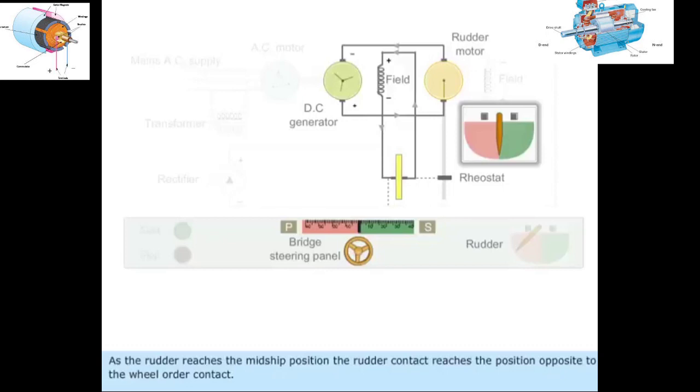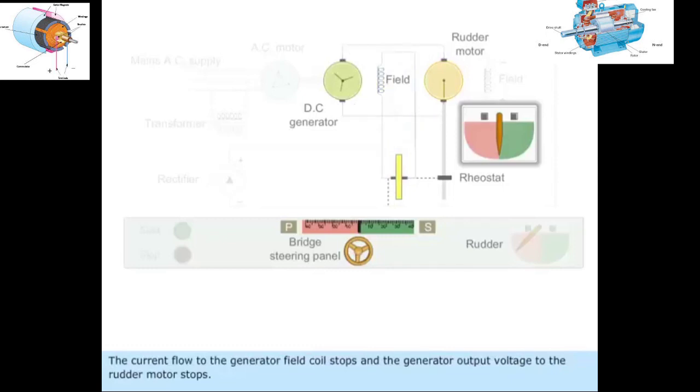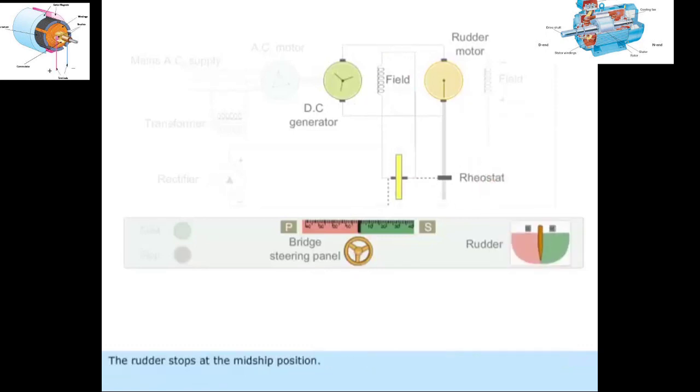As the rudder reaches the midship position, the rudder contact reaches the position opposite to the wheel order contact. The current flow to the generator field coil stops and the generator output voltage to the rudder motor stops. The rudder stops at the midship position. The same process continues for all wheel orders.